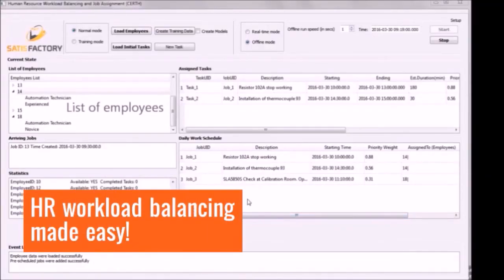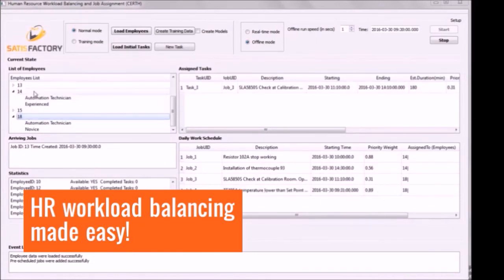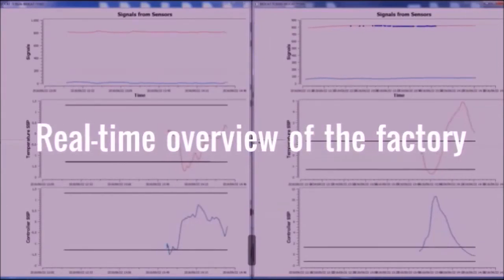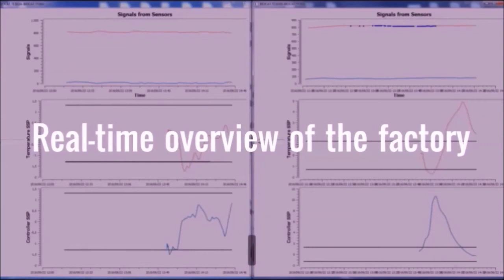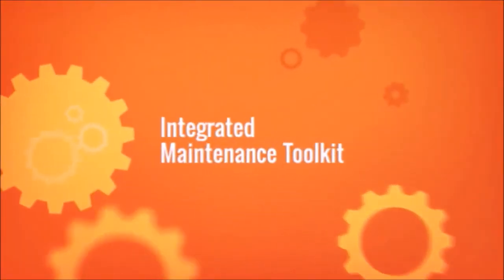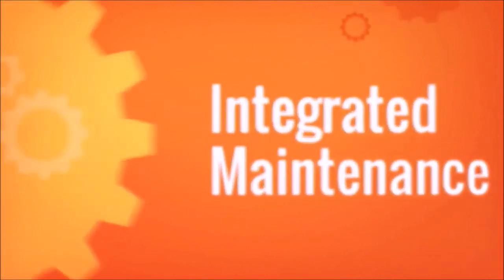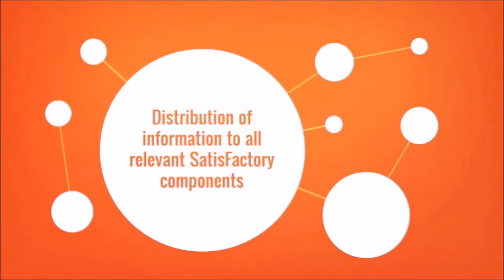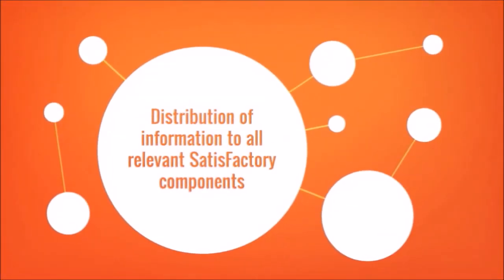Human resources workload balancing made easy. You can optimize HR workload balancing via real-time HR re-adaptation and suitability ranking, automated task prioritization and customized notifications to employees. Moreover, through the visual and real-time analytics component, you can monitor the status of the factory in real-time. What's more, the integrated maintenance toolkit creates maintenance tasks based on identified malfunctions, available workers, assets and spare parts, and distributes respective messages to all other Satisfactory components.